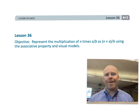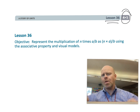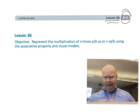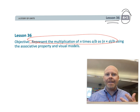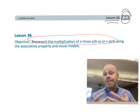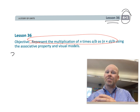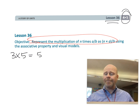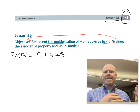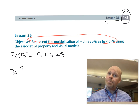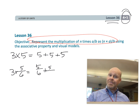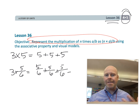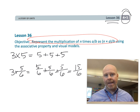This is fourth grade, Module 5, Lesson 36. In this lesson, students are going to be representing the multiplication of n times a over b as n times a over b. Basically, we're connecting the concept of repeated addition. We know that 3 times 5 can also be thought of as 5 plus 5 plus 5. So 3 times 5 sixths can be represented as 5 sixths plus 5 sixths plus 5 sixths, connecting that to multiplication and moving toward the standard algorithm.